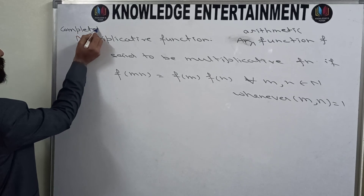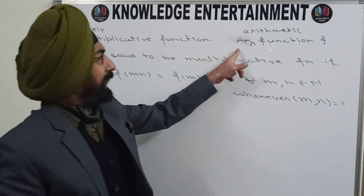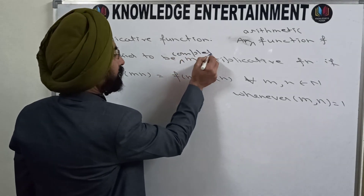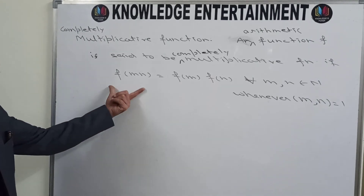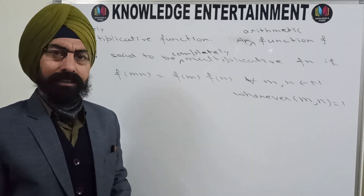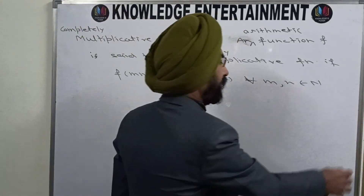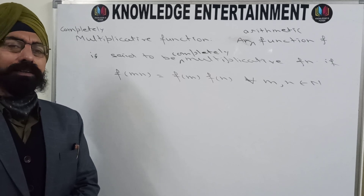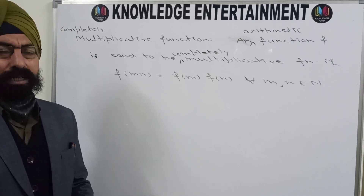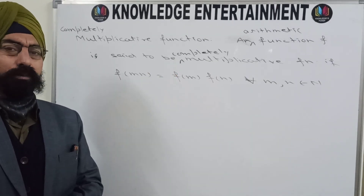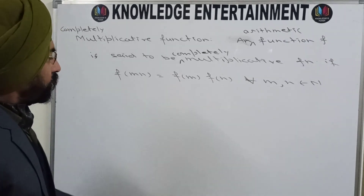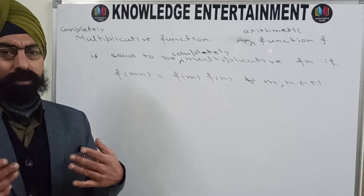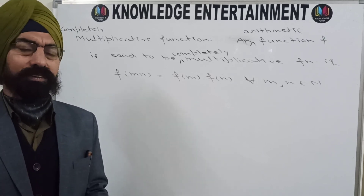A completely multiplicative function is an arithmetic function f such that f(mn) = f(m)·f(n) for every m, n belonging to the natural numbers, with no condition required on gcd(m, n). That is, m and n need not be co-prime — for any values of m and n, f(mn) = f(m)·f(n). In the next video we will discuss problems based on multiplicative functions, completely multiplicative functions, and arithmetic functions. Thank you.